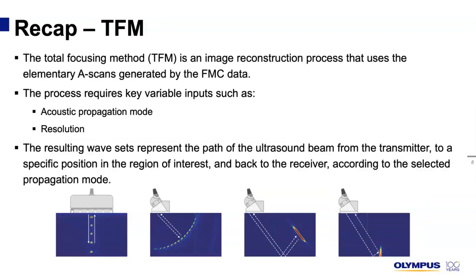TFM, or Total Focusing Method, on the other hand, is an image reconstruction process that uses those elementary A-scans. The process requires key variable inputs such as acoustic propagation mode and resolution. Acoustic propagation mode means whether we are going to use longitudinal waves, transverse waves, whether we're going to skip, mode convert, etc. Resolution refers to how fine or coarse our grid of inspection is going to be.